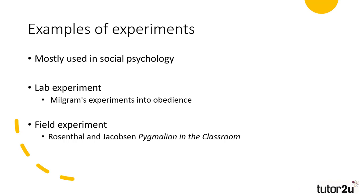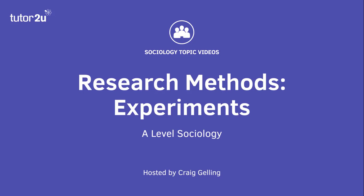A few examples of research that has involved experiments, most of which come from social psychology: Milgram's obedience remains one of the seminal studies for those in the social sciences. For those doing the media module, Bandura's Bobo Doll experiments are also worth mentioning. In education, the most notable field experiment was conducted by Rosenthal and Jacobson, examining the impact of teacher expectations on student performance. That concludes this Tutor2U sociology topic video on research methods looking at experiments.